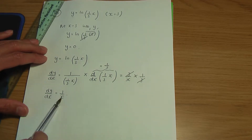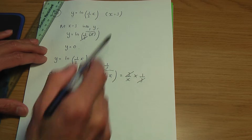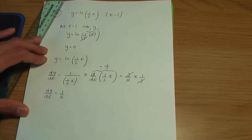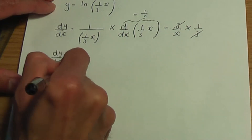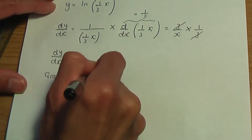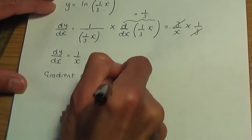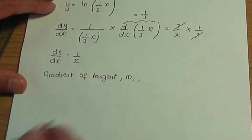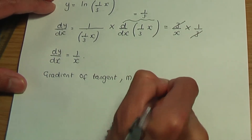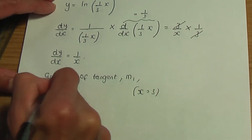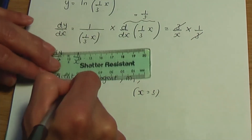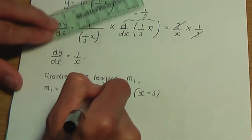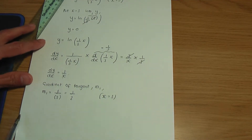To work out the gradient of the tangent, I put x equals 3 into the gradient function. I'll call the gradient of the tangent m1. So replacing x with 3 in dy over dx, m1, the gradient of the tangent, is 1 divided by 3, giving us 1 over 3.